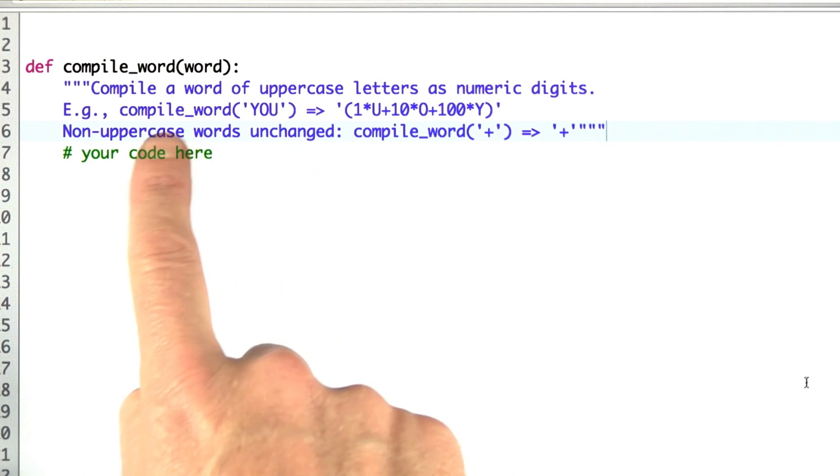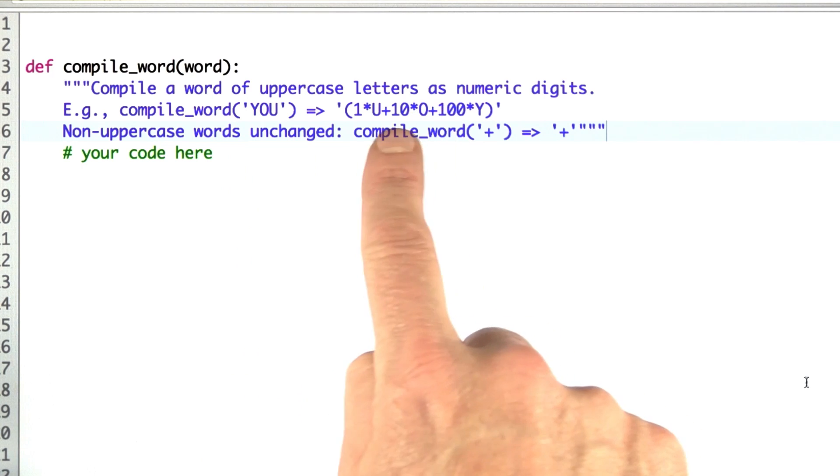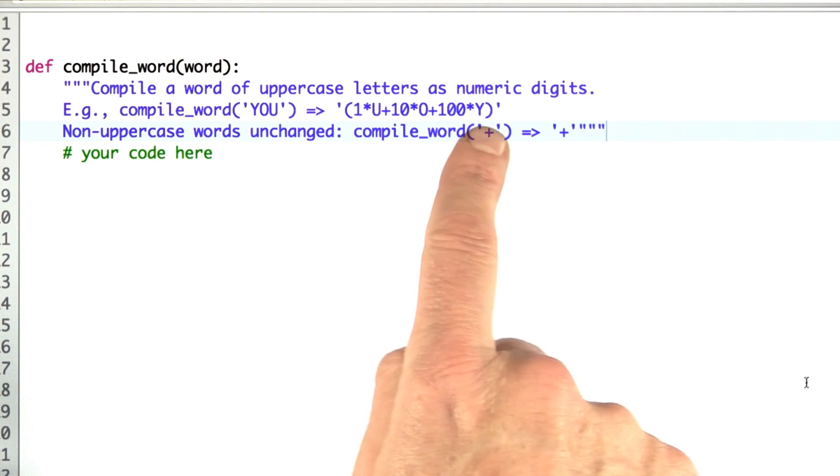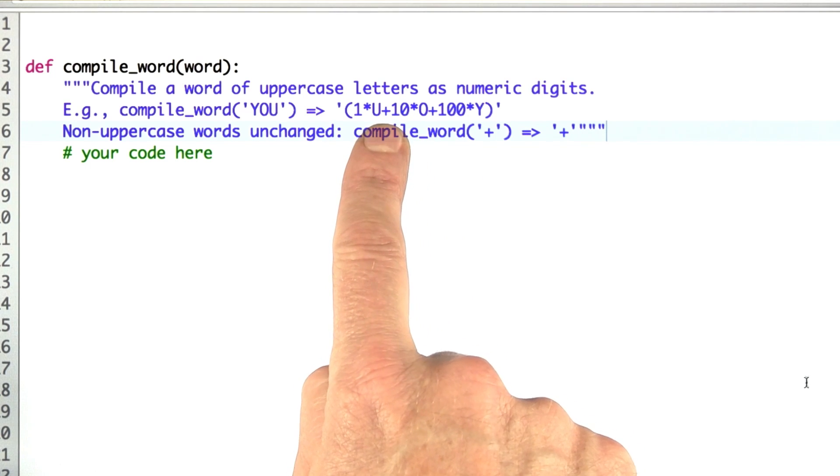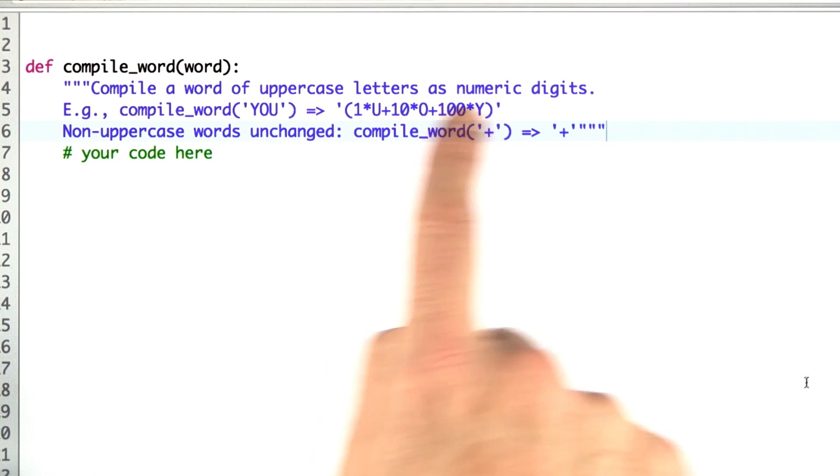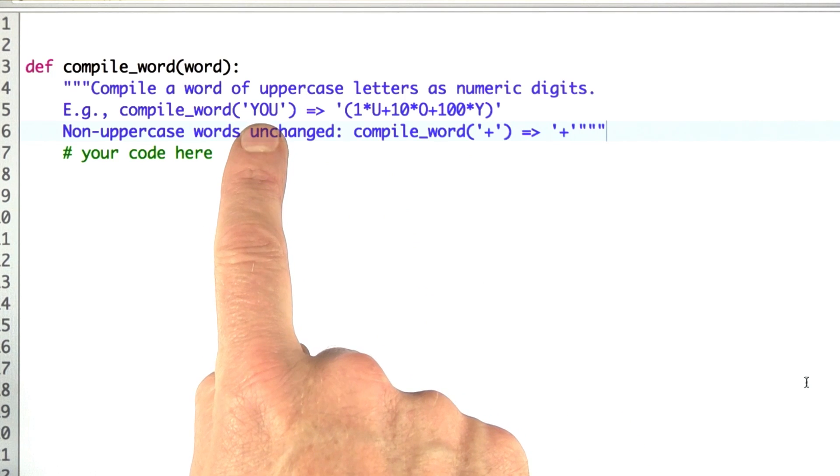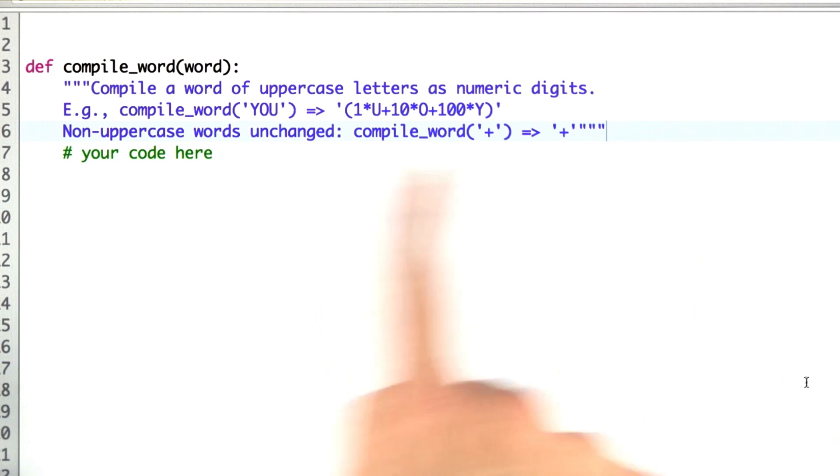Compile_word where compile_word of YOU is something like this. Don't worry about the commutativity and associativity. You can write this any way you want as long as it is code that would compute the right answer. It's important to put parentheses around it. Anything that's not an uppercase word, you should leave alone.